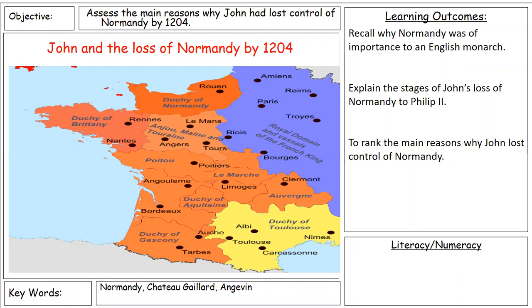This next lesson in Unit 2 of Richard and John is actually the last lesson in Unit 2. We're going to be looking at John and how he lost Normandy by 1204. This is the start of King John's reign - remembering that Richard died in 1199, and by 1204 John had managed to lose one of the most important areas that made up the Angevin Empire.